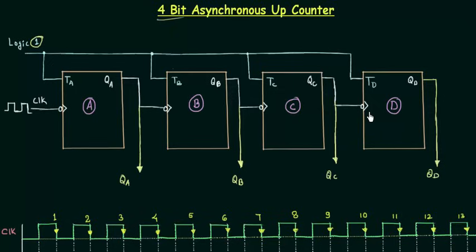These are the basic things I want to tell you at the beginning of this presentation. You know how to analyze this — how to get the output waveform — and we will do it quickly, then we will see the truth table for the 4-bit asynchronous up counter.